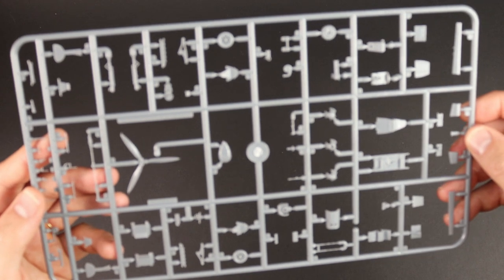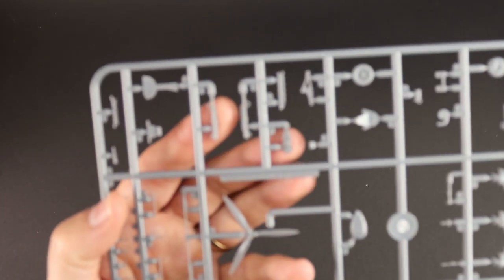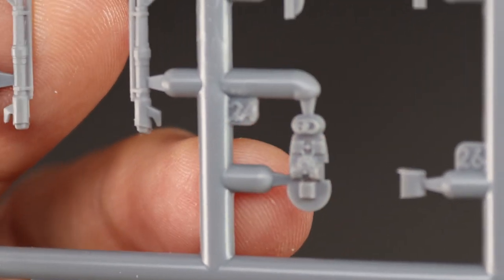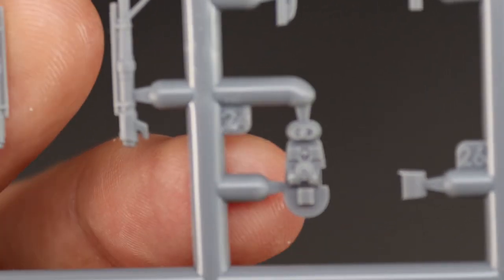Astonishing. I mean who'd have thought you could get 1:72 scale detail like this. I mean this is the part of the engine. I mean look at that. It'd be hard to get that in resin frankly.